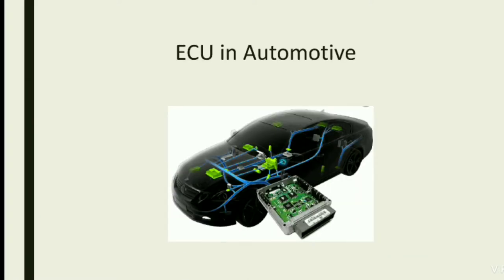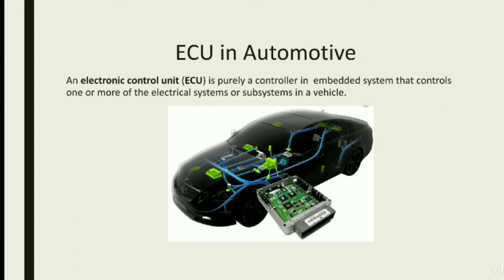So let's start with ECU in automotive. In simple terms, the strict definition of ECU — Electronic Control Unit — is purely a controller in embedded systems that controls one or more electrical systems or subsystems in a vehicle.